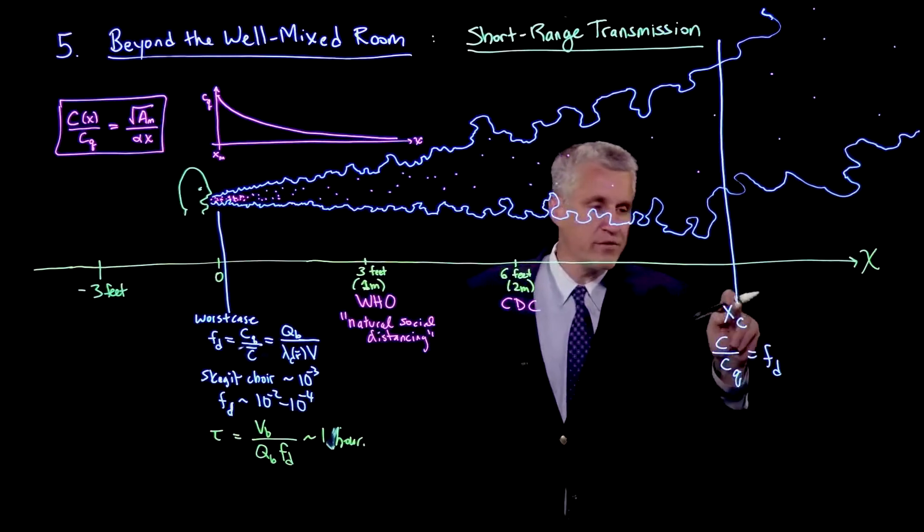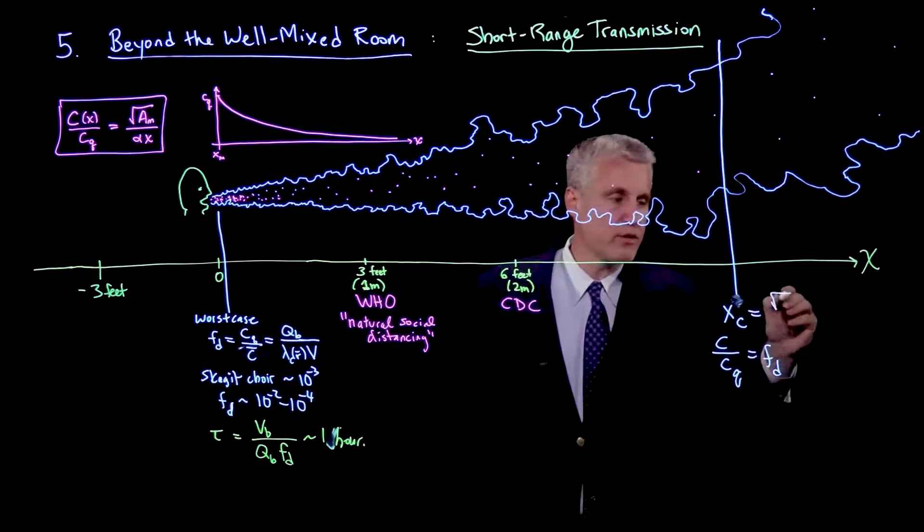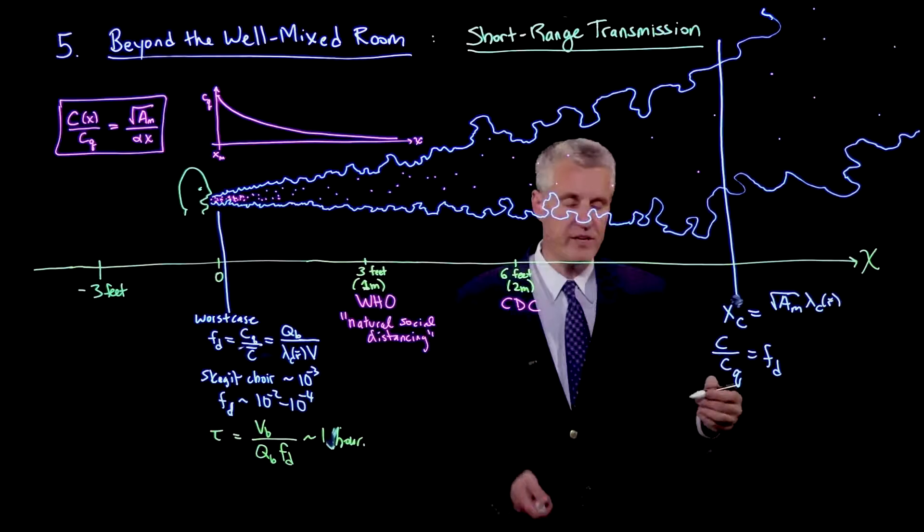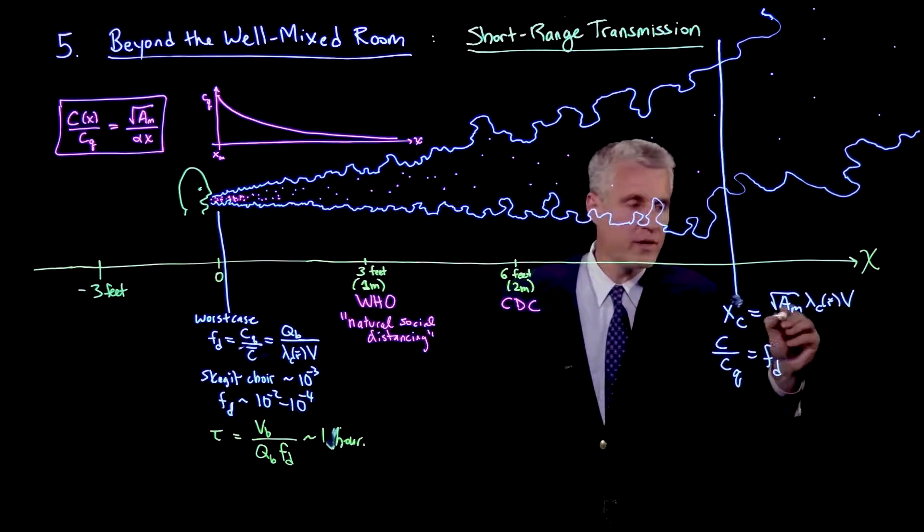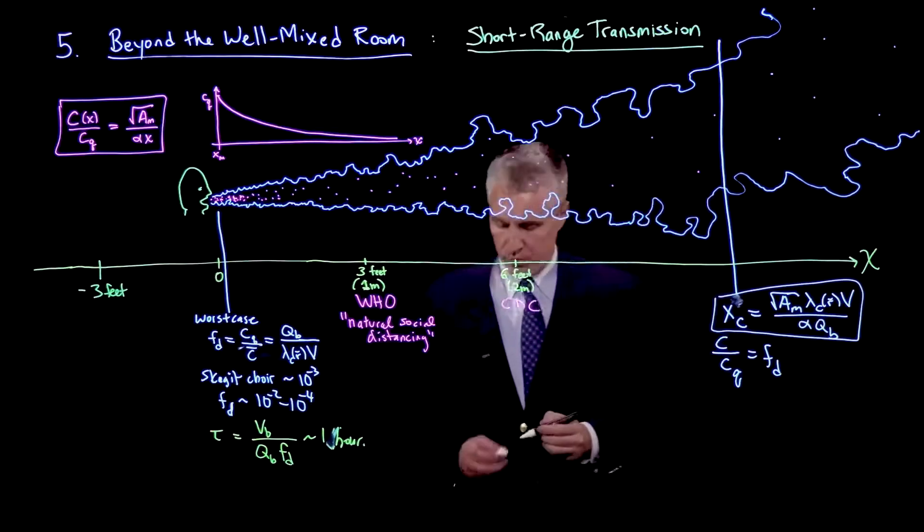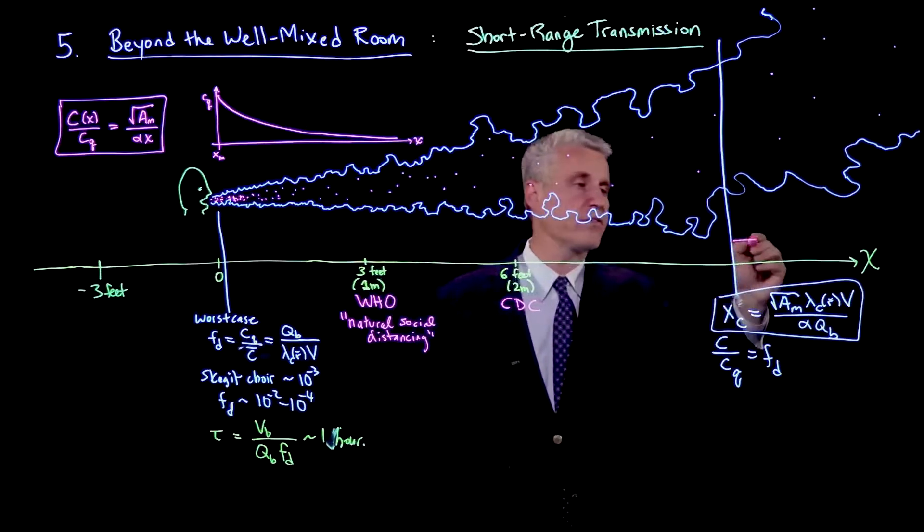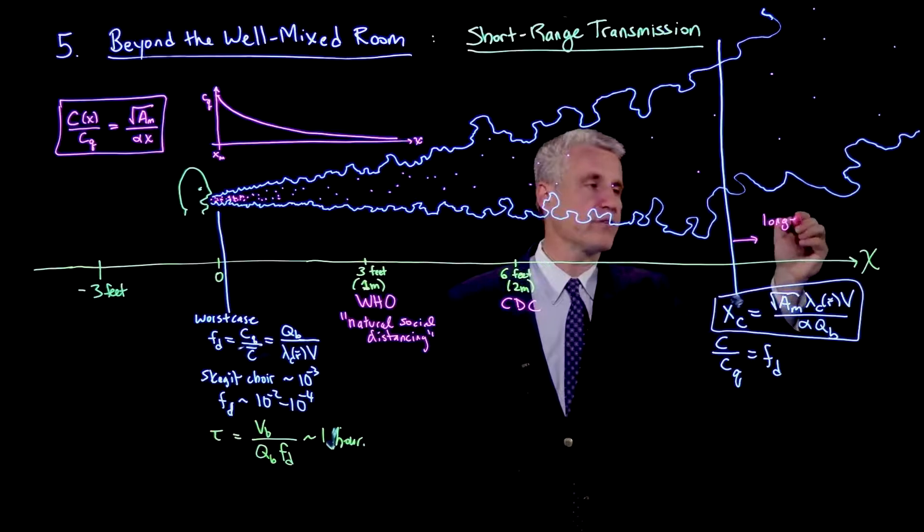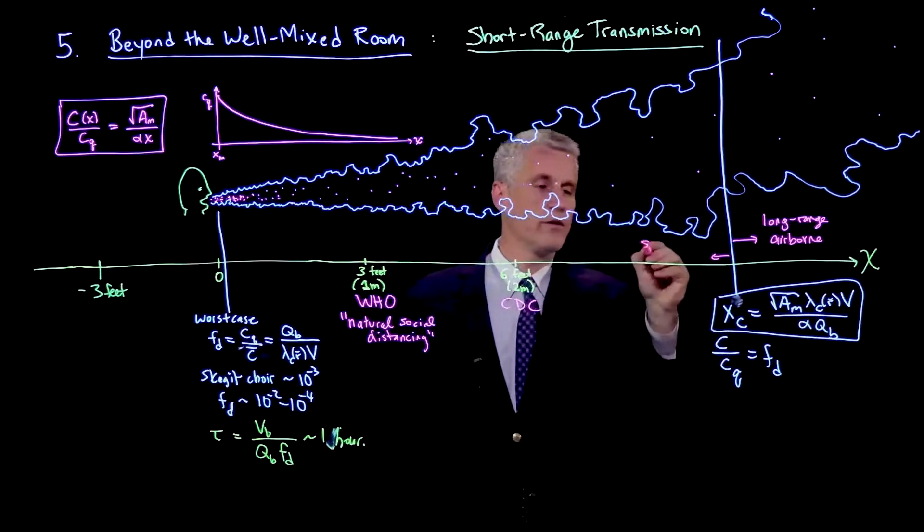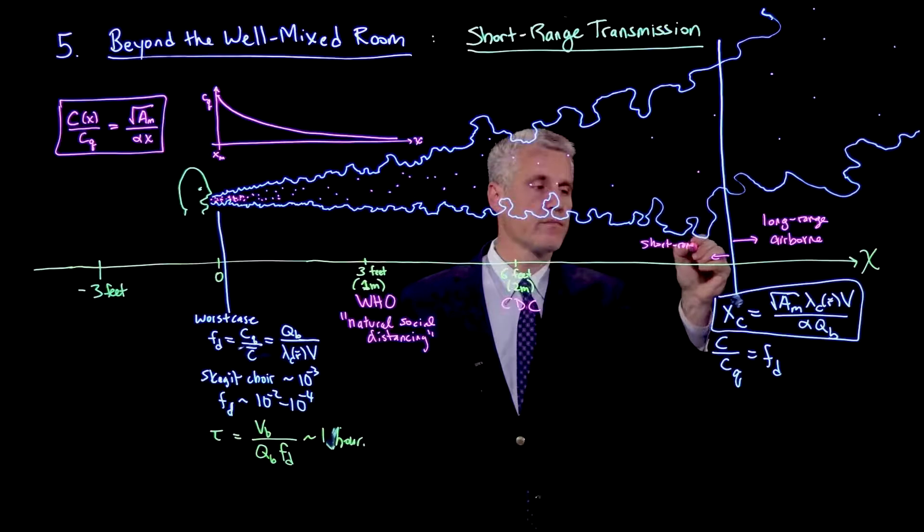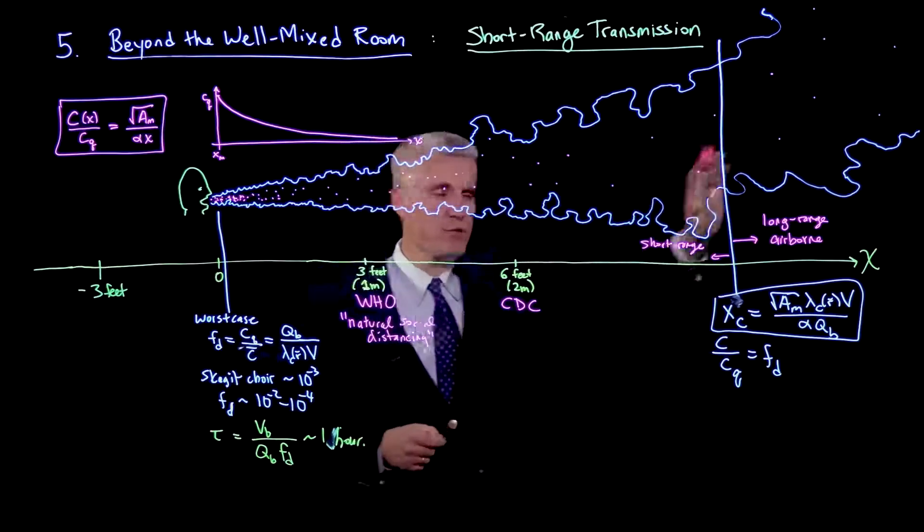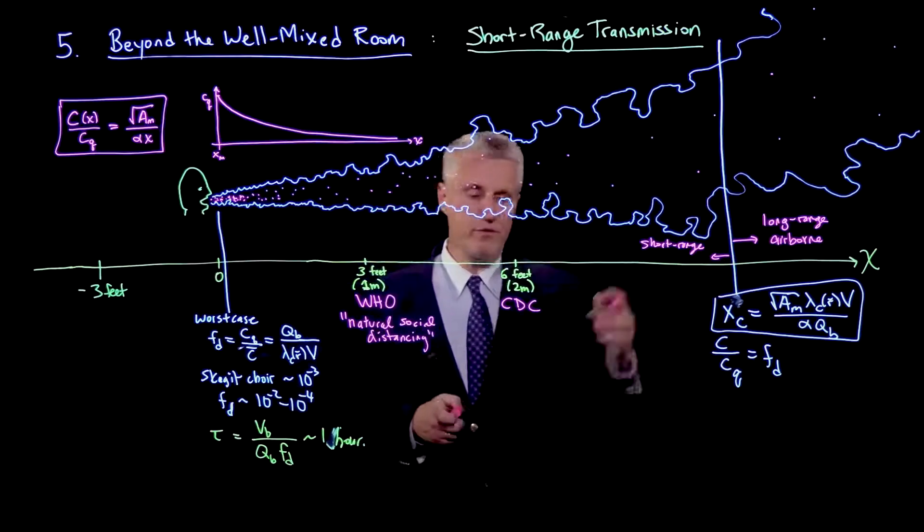If you use our formula for C there, you get a formula for xc which is square root of the mouth area times lambda c of r bar, the decay rate of the concentration field, times the volume of the room, divided by alpha times Qb. I would argue that this is really the boundary which separates long-range airborne transmission by aerosols with short-range transmission, which also includes aerosols.